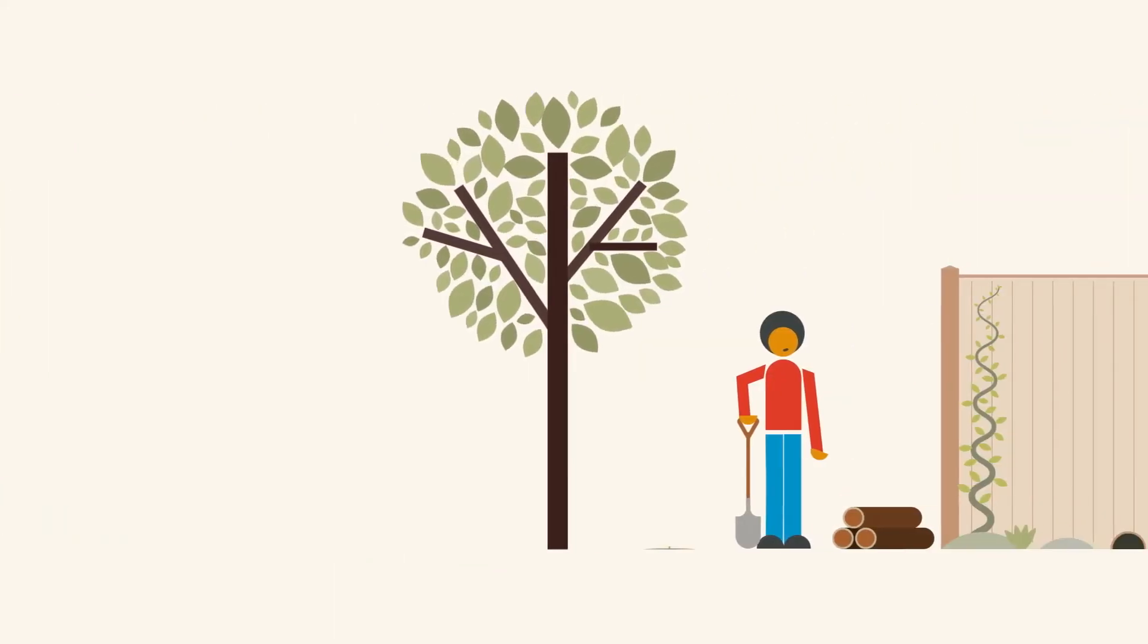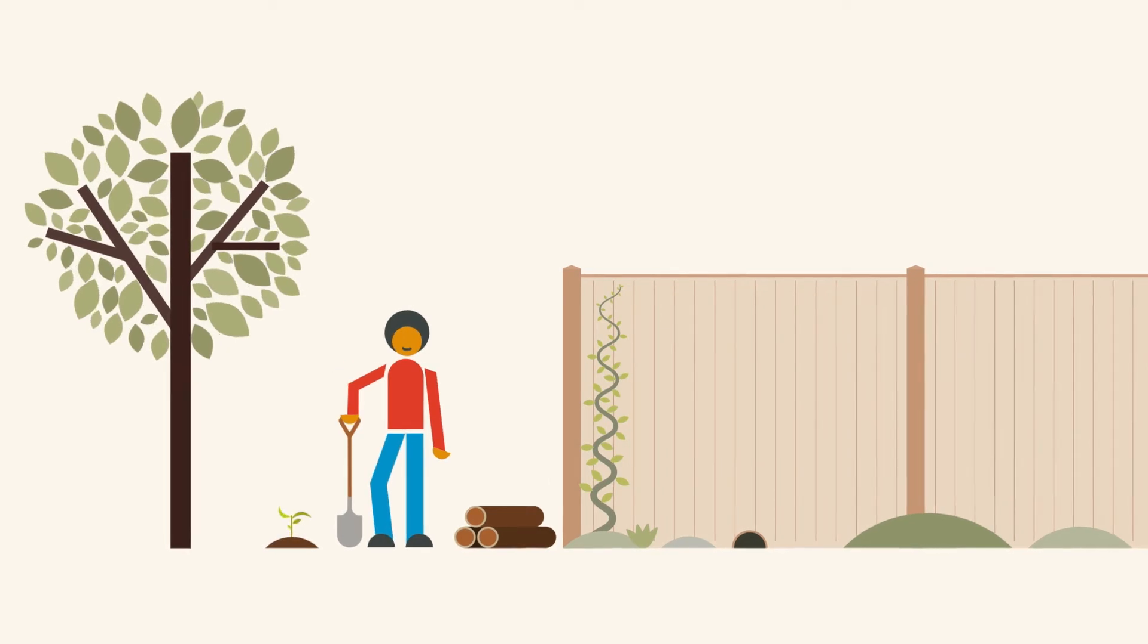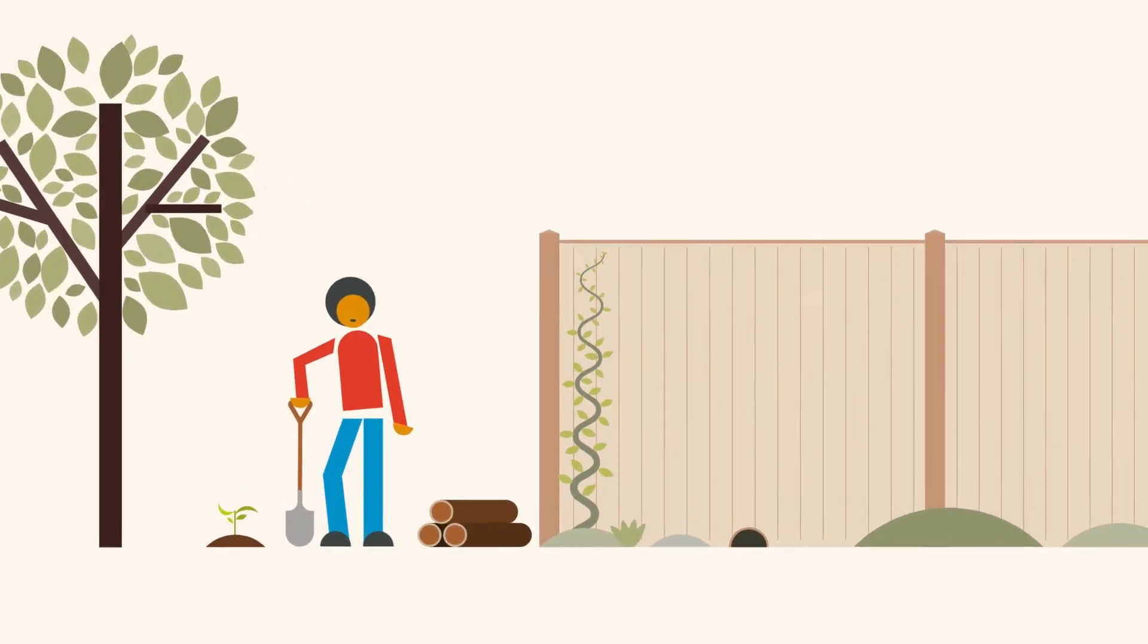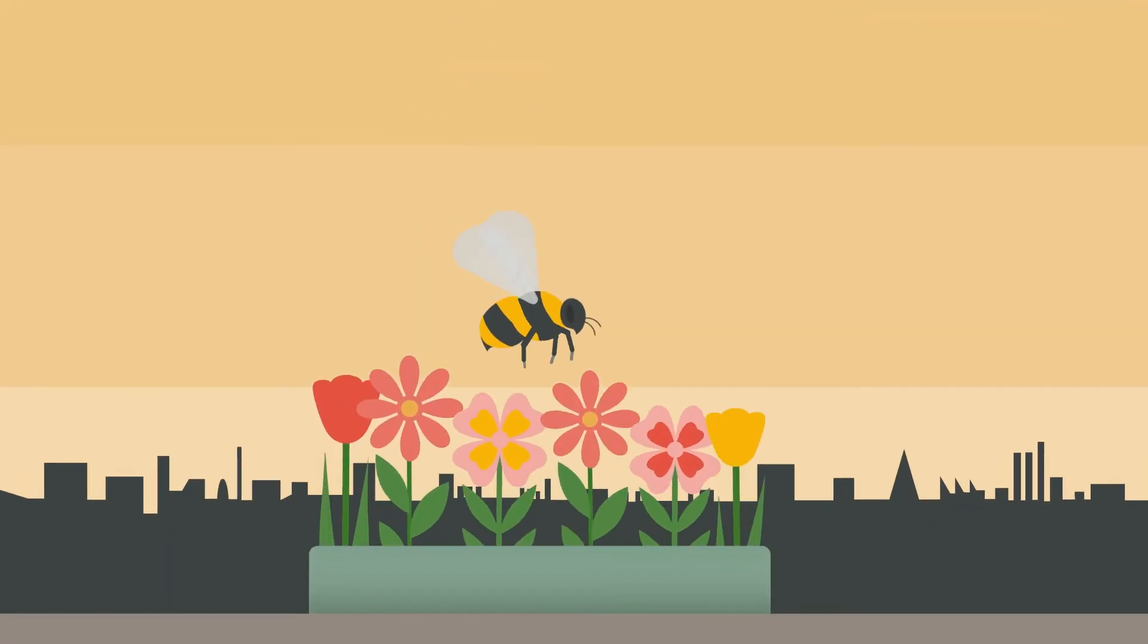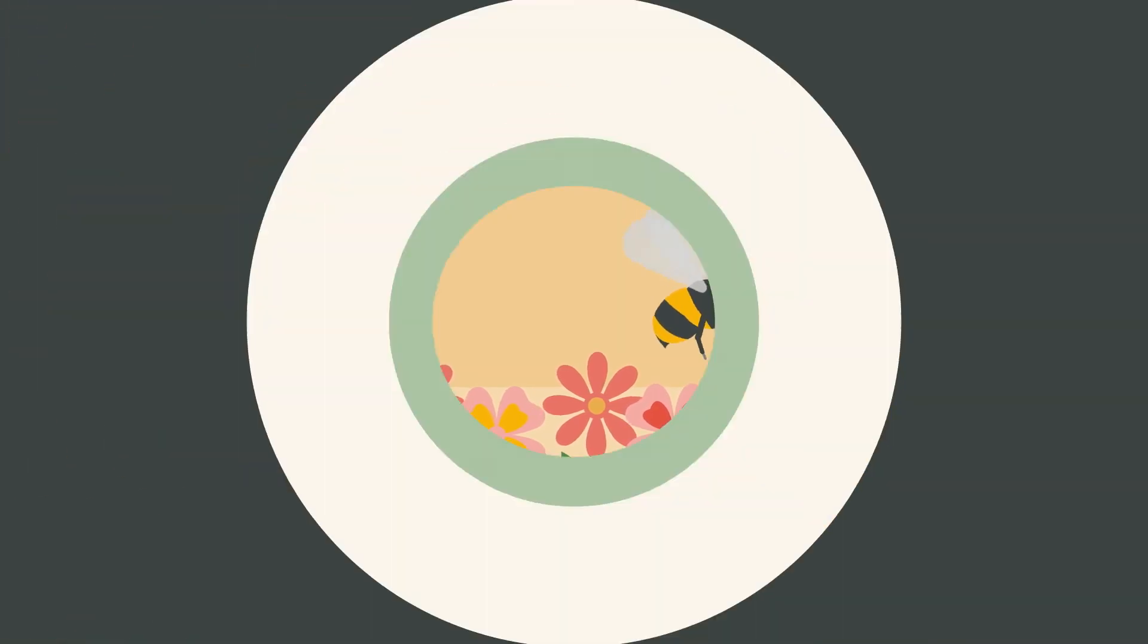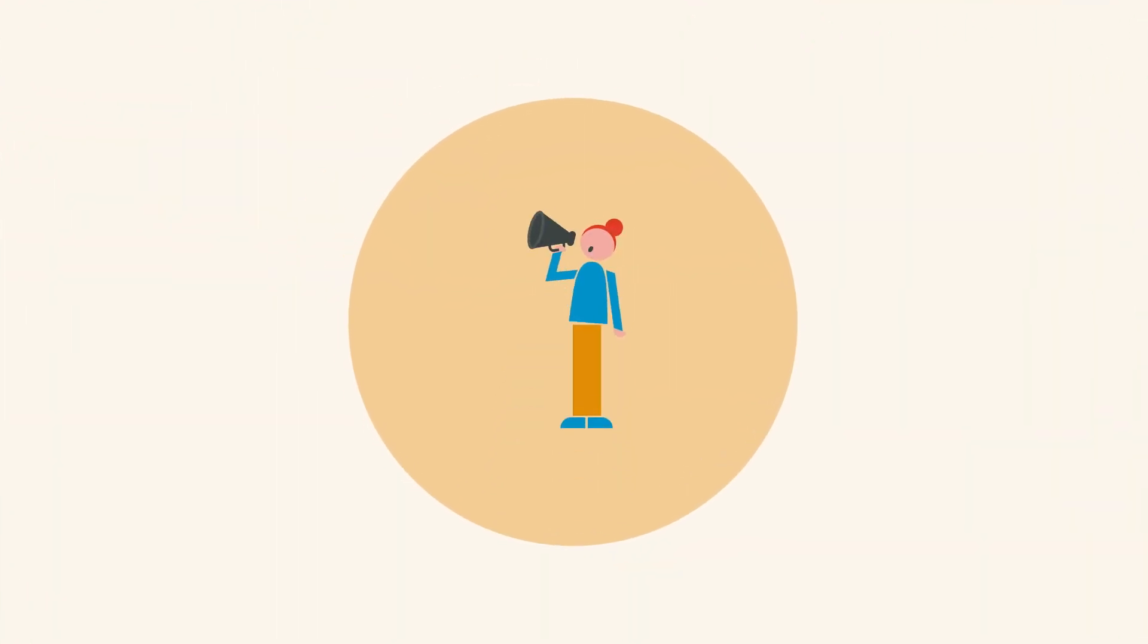You can start as small and as local as you like. You could cut a hole in your garden fence to create a hedgehog highway, plant bee-friendly flowers in your window box, or join like-minded neighbors in lobbying your local MP.